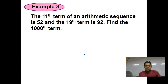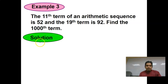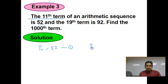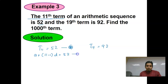The 11th term of an arithmetic sequence is 52 and the 19th term is 92. Solution: extracting the information given — the 11th term = 52 (Equation 1) and the 19th term = 92 (Equation 2).